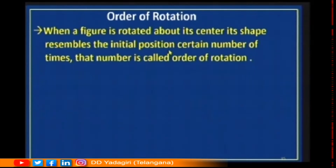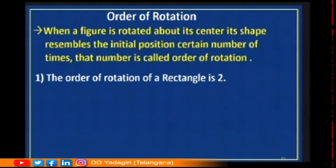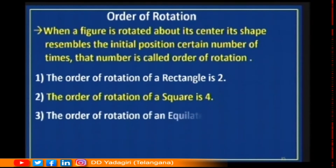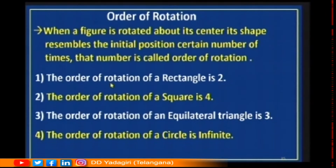When a figure is rotated through its center and its shape resembles the initial position a certain number of times, that number is called the order of rotation. A rectangle rotated through 360 degrees appears the same two times, so its order of rotation is 2. A square looks the same at 90°, 180°, 270°, and 360°, so its order of rotation is 4. An equilateral triangle looks the same at 120°, 240°, and 360°, so its order of rotation is 3. A circle has infinite order of rotation.